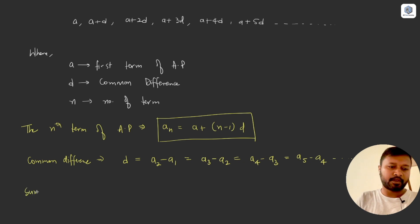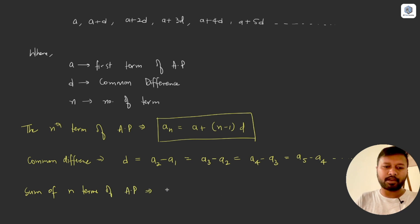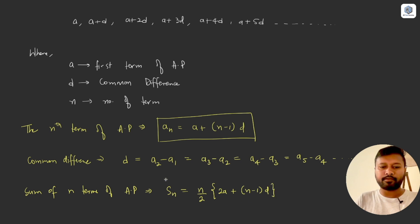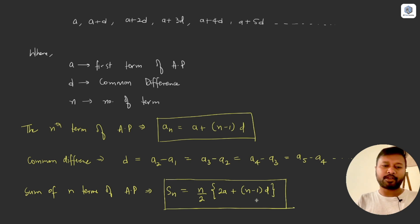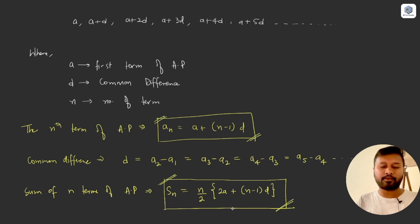The next important formula is the sum of n terms of AP, denoted S_n. The formula is: S_n = (n/2) × [2a + (n−1) × d]. These two formulas — the nth term formula and the sum of n terms formula — are the only ones you need to remember for AP, and they are the most important.